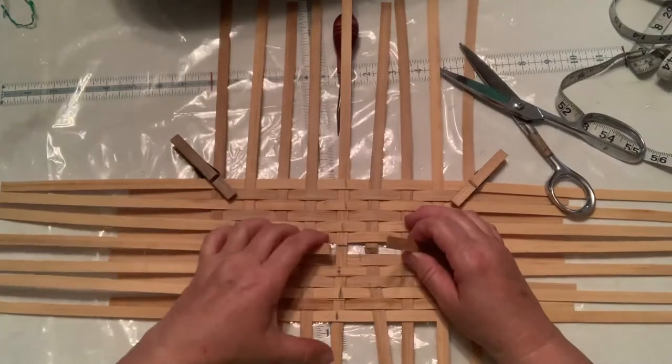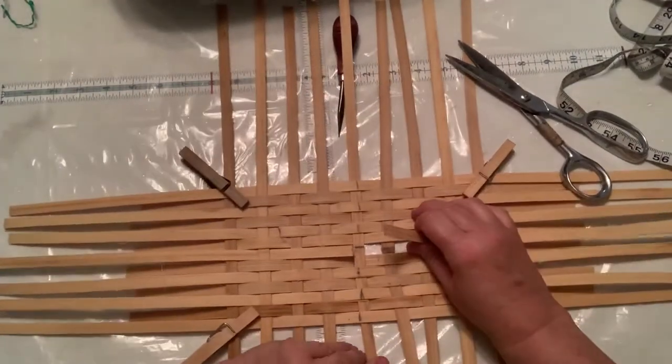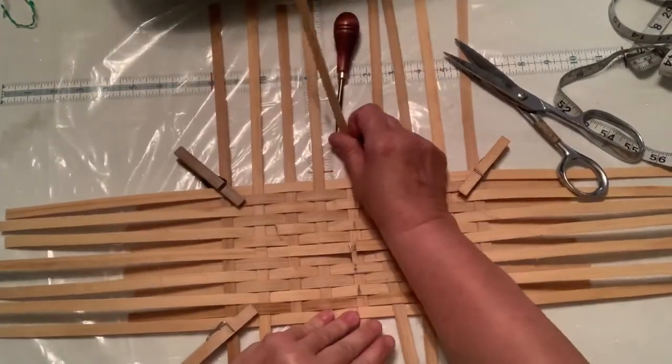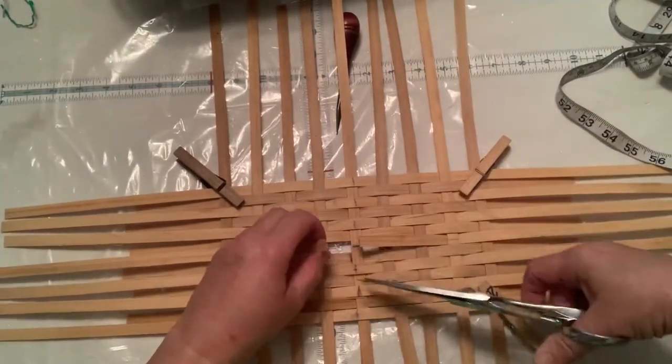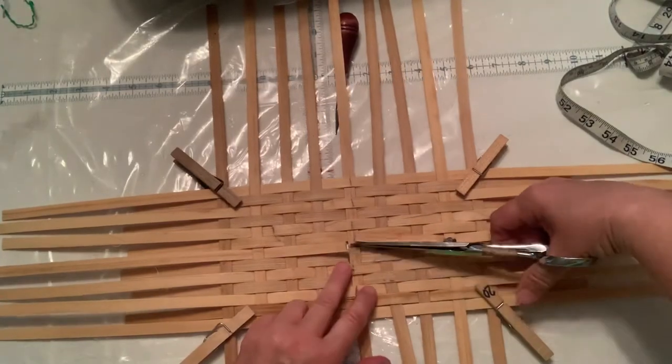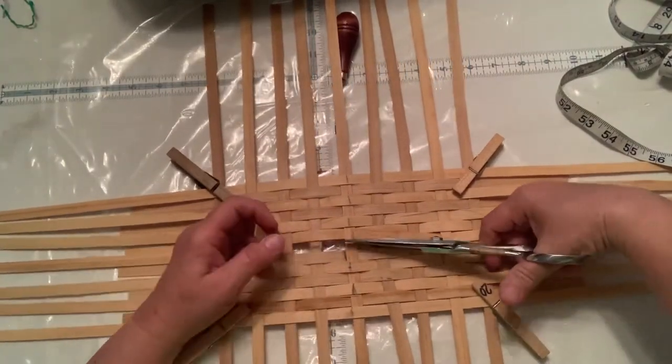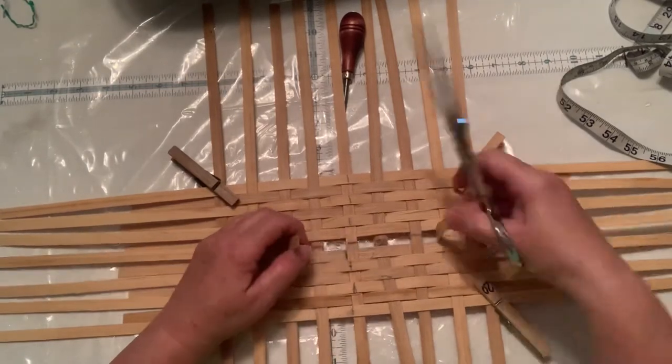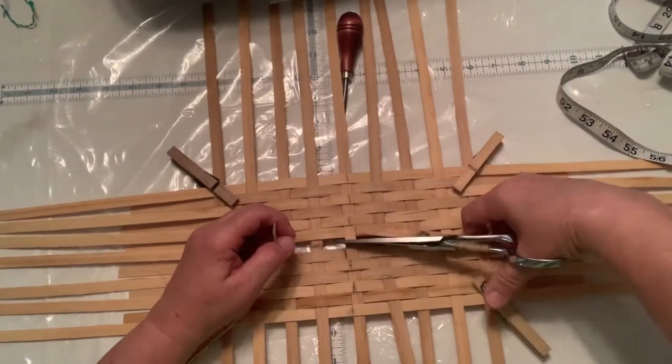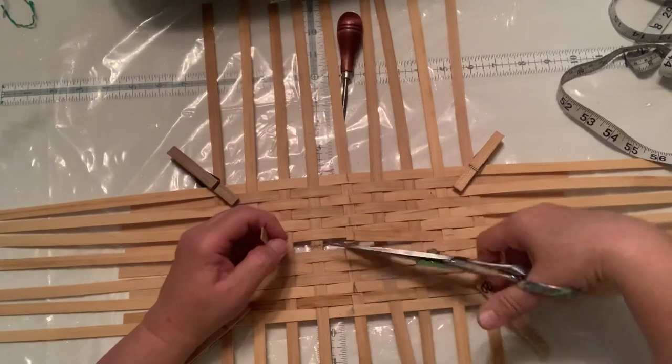They need to be out of the way a little bit because what you need to do is this also right here needs to be cut. So I'm now on the ones underneath, the three centers. Here's the middle one again, so I'm going to cut that one and then I'm going to cut these two.